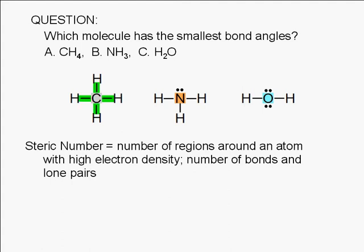How about ammonia? Here we also have a steric number of four for the nitrogen atom: one, two, three, four.